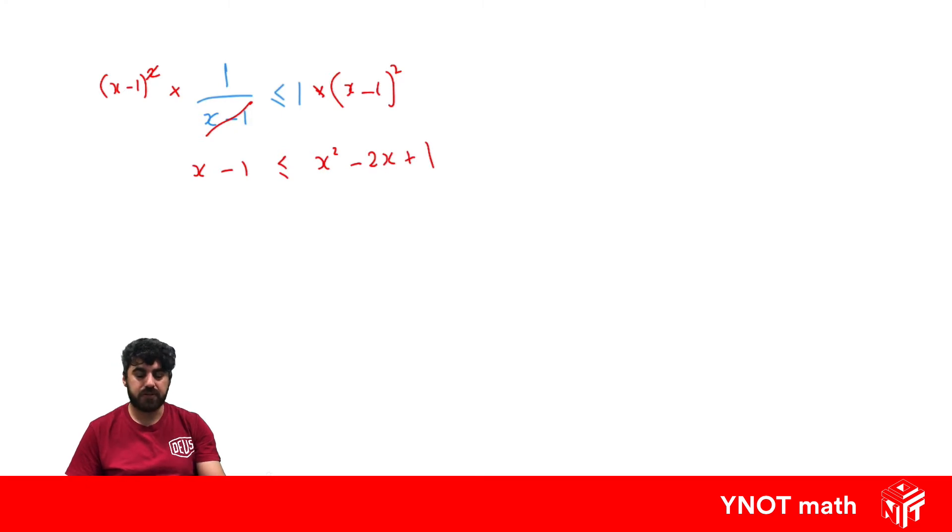And we can bring everything to one side. Usually we like to keep the x squared term positive, so we'll bring everything to the right-hand side. So we're going to have x squared, minus 2x minus another x is minus 3x, and plus 1 to both sides gives us plus 2. And we'll just rewrite it so everything is on the left-hand side. When we switch the sides with an inequality, we also switch the inequality around.